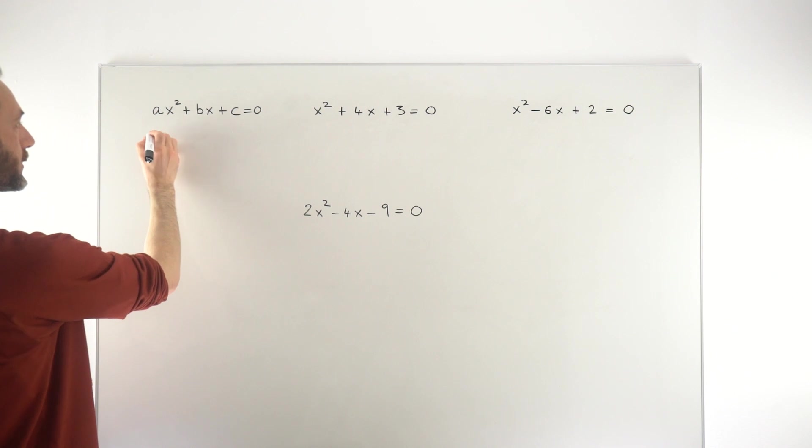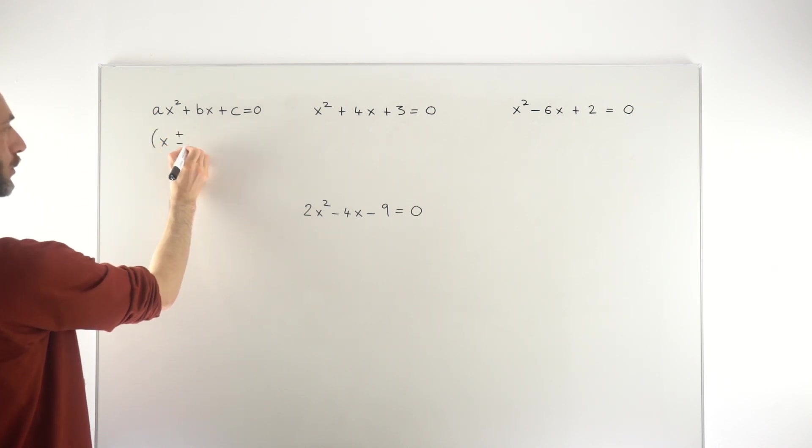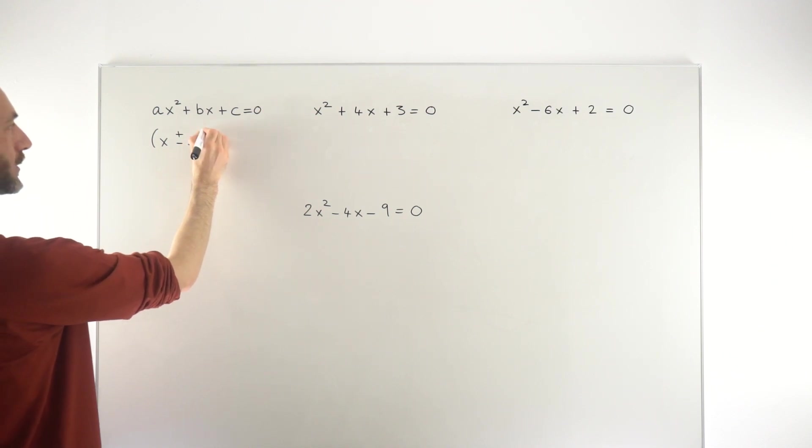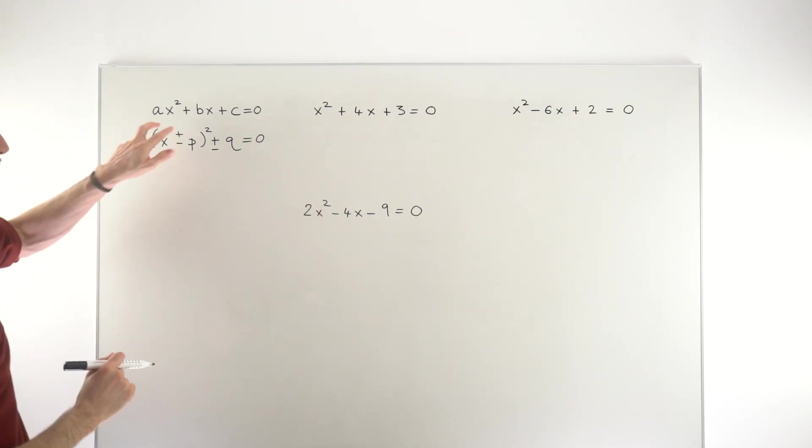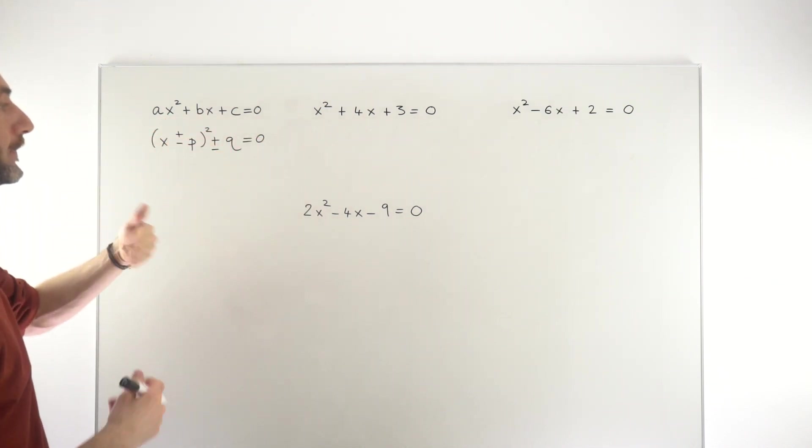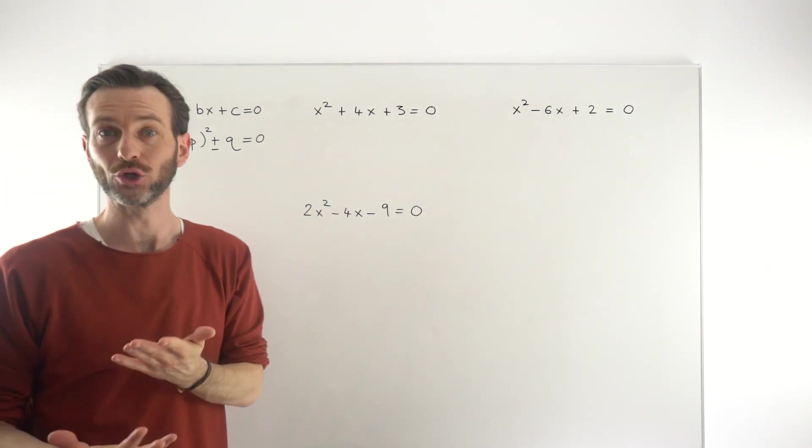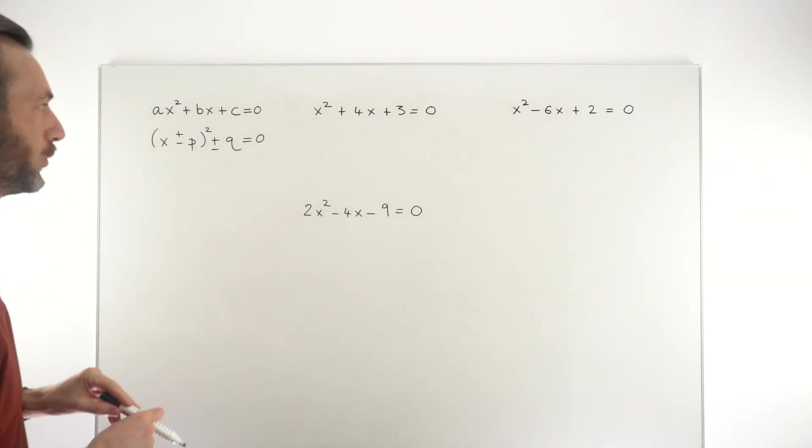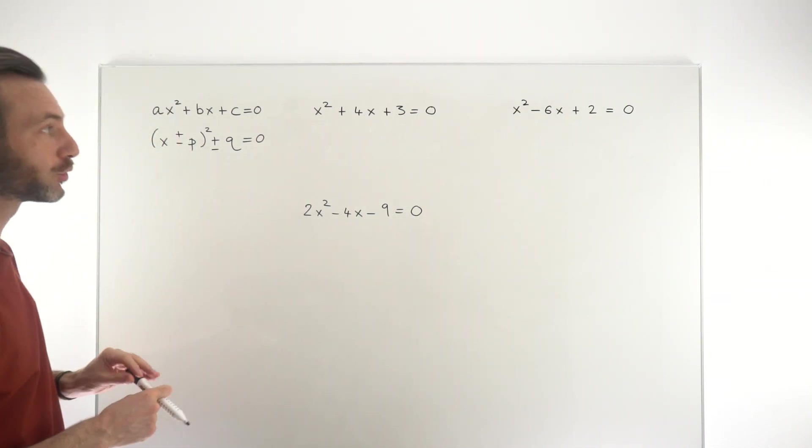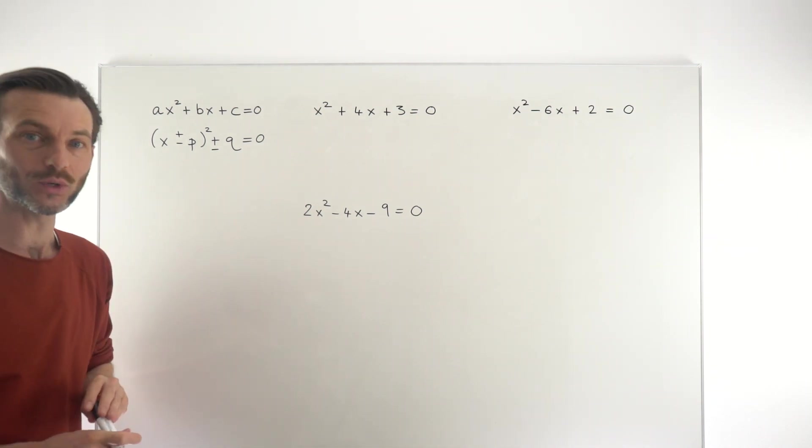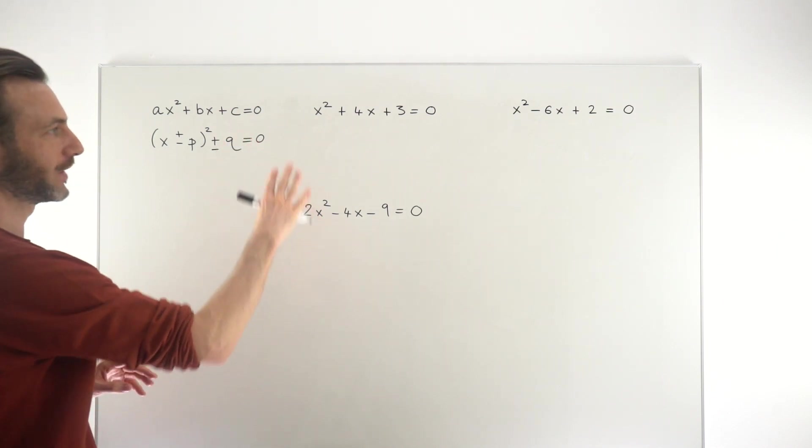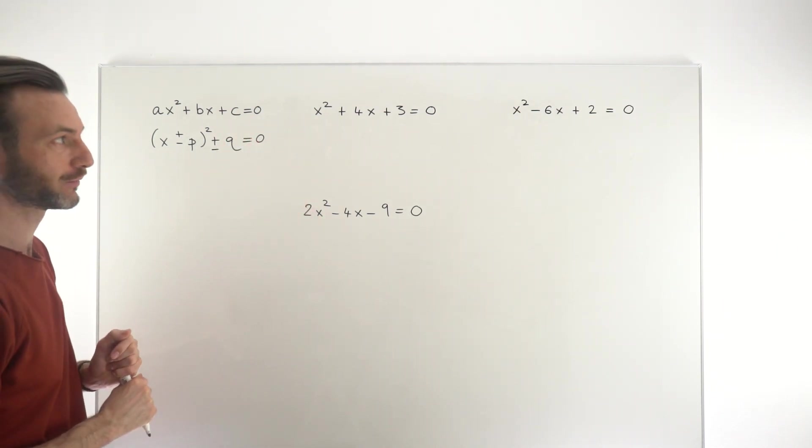Instead we're going to rewrite the quadratic in completed square form, which would be (x + p)² + q = 0. So we're just rewriting this part like that, and then there's a process for finishing it off and solving it that way. So it's a fairly straightforward process, but the challenge is remembering how to do completing the square.